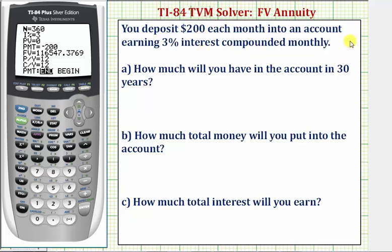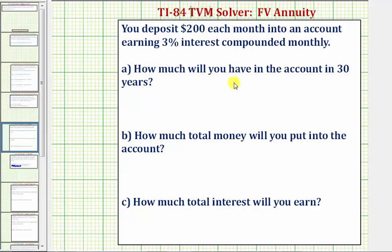Remember, if they don't tell us how the interest is compounded, we assume it's the same as the number of payments per year. Now we'll go back up to future value, which we're solving for, and press Alpha Enter. Notice how the calculator puts a square on the far left indicating we solved for this value. The future value is $116,547.38, which is the account balance after 30 years.